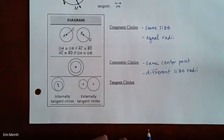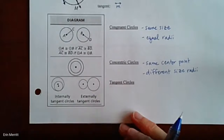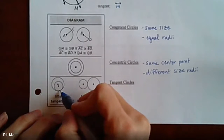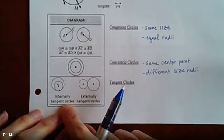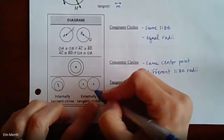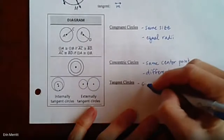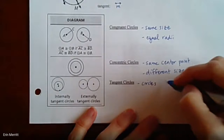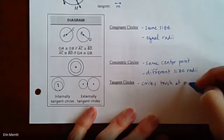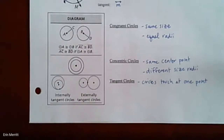Tangent circles, since tangent means they intersect at just one point, share a single point on the edge. Internally tangent means one circle is inside the other; externally tangent means they are next to each other and just share that one point. So tangent circles simply touch at one point.